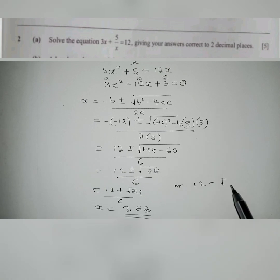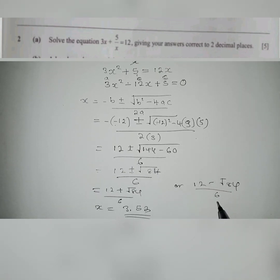Remember we're supposed to put the answer in two decimal places, so it will be equal to this. Next we can say 12 minus root of 84 over 6, and when we work out things here we'll find that x will be equal to 0.47. So these are the two solutions.